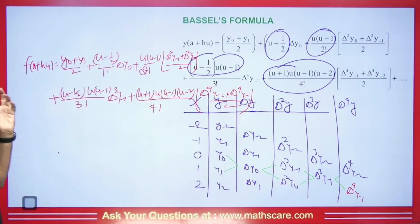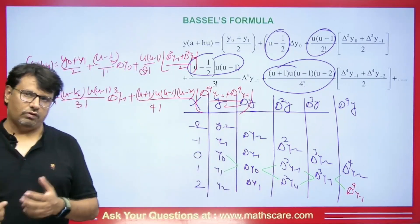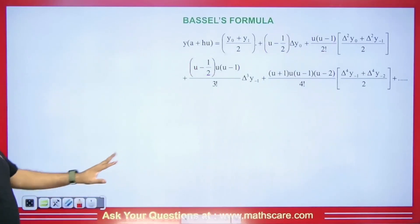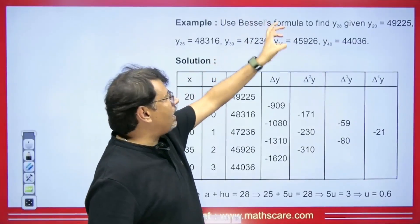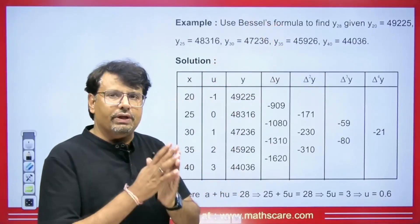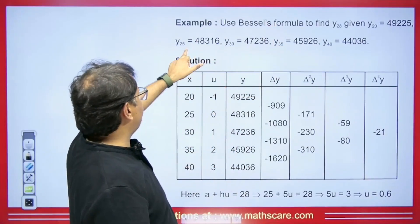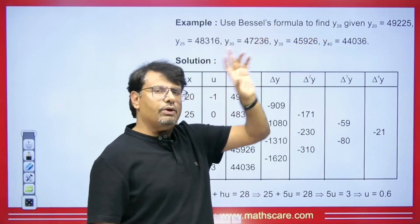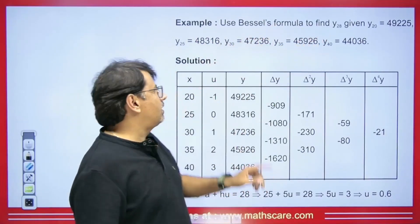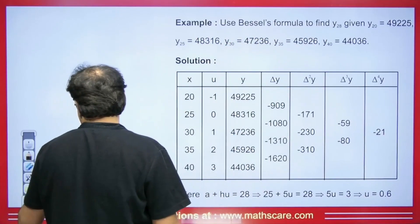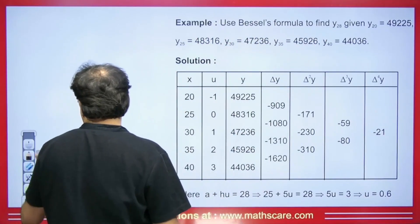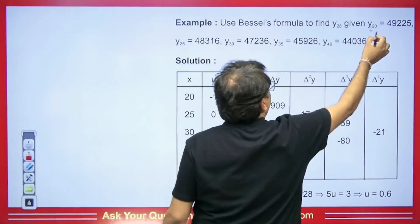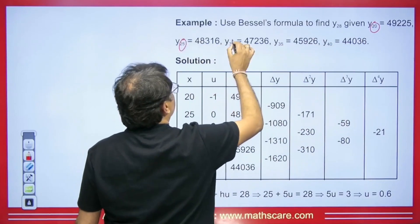Let me give you an example. You have to find the value of Y(28) using the Bessel formula, where Y20, Y25, Y30, Y35, and Y40 values are given. So whenever we need to make the table here, we write these values — 20, 25, 30, 35 and 40 — in the table.